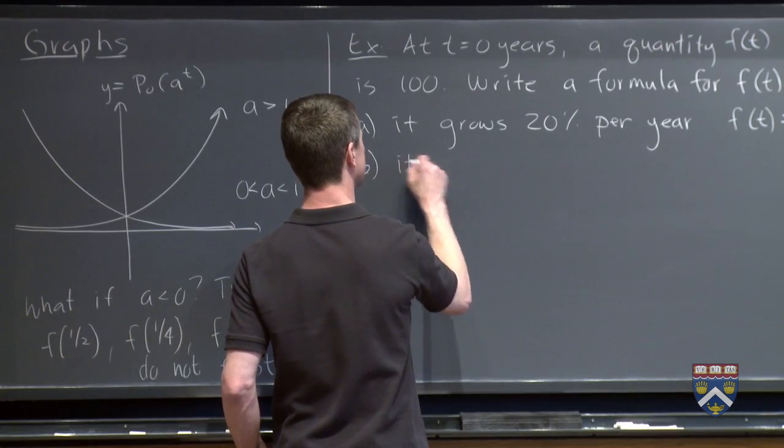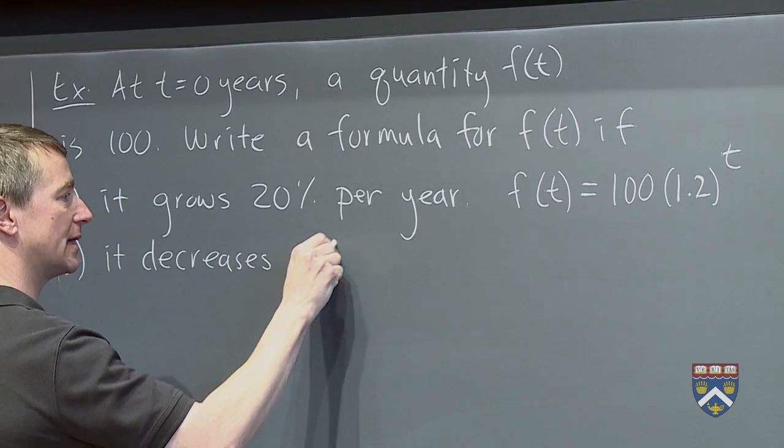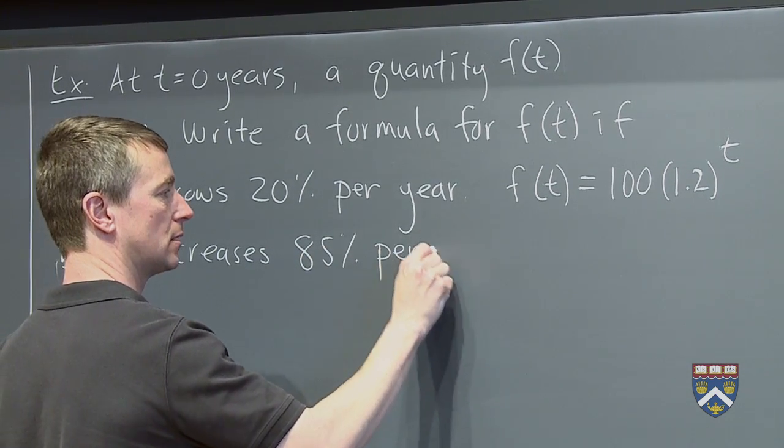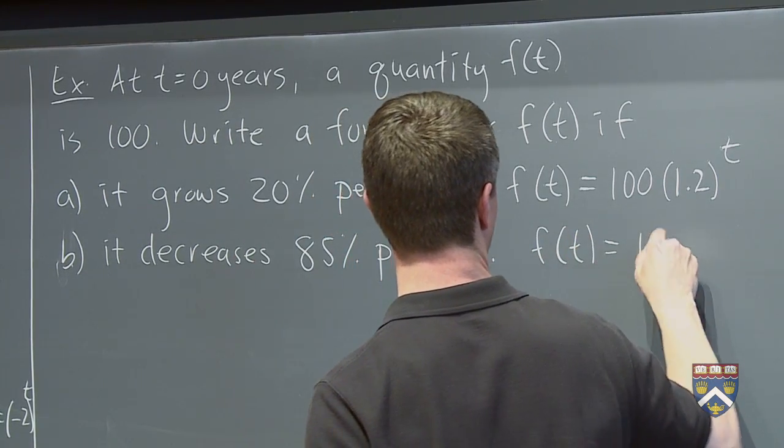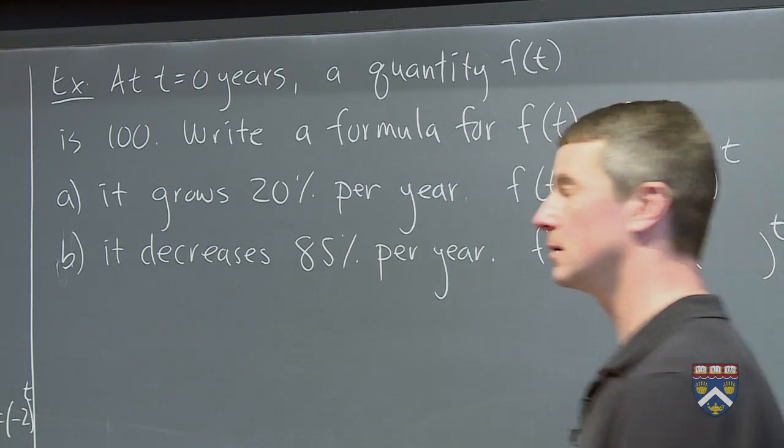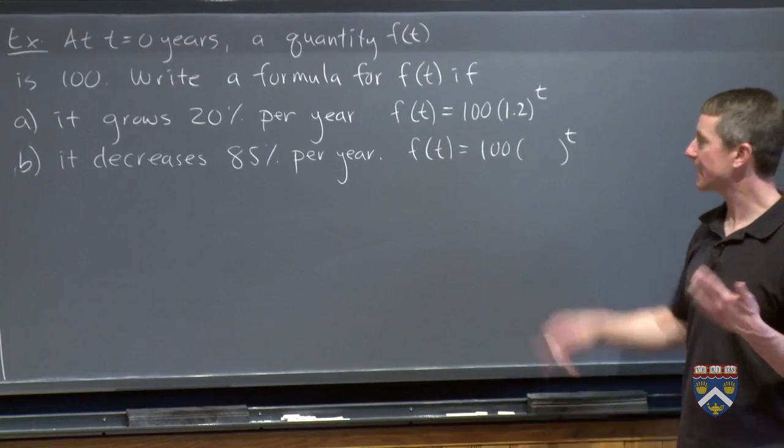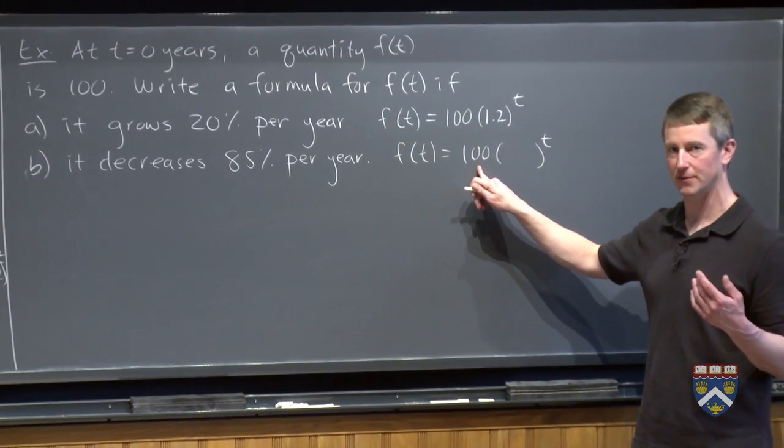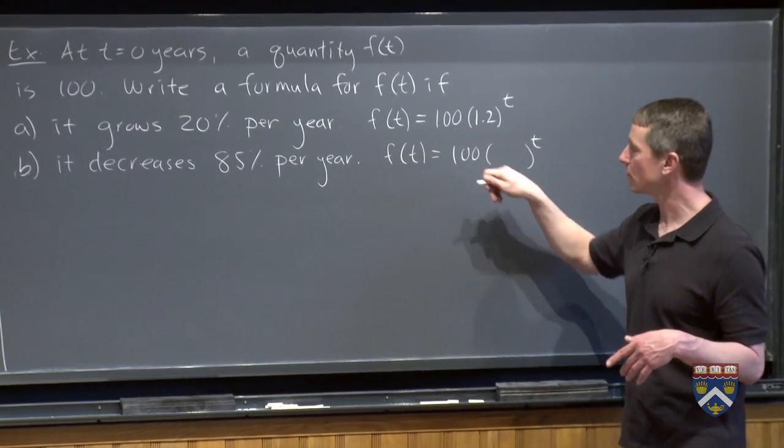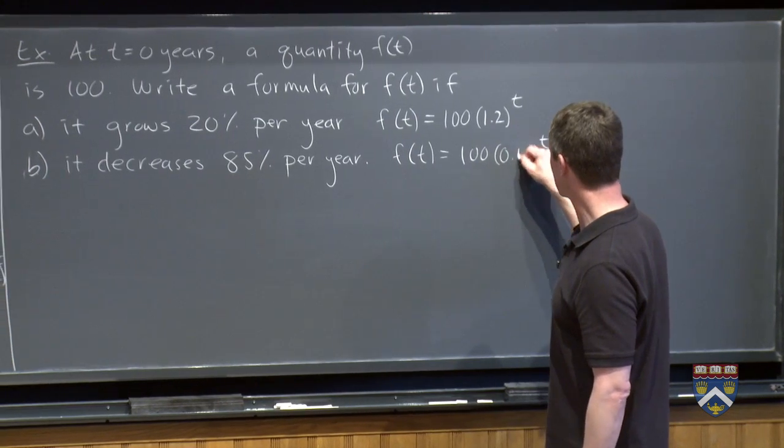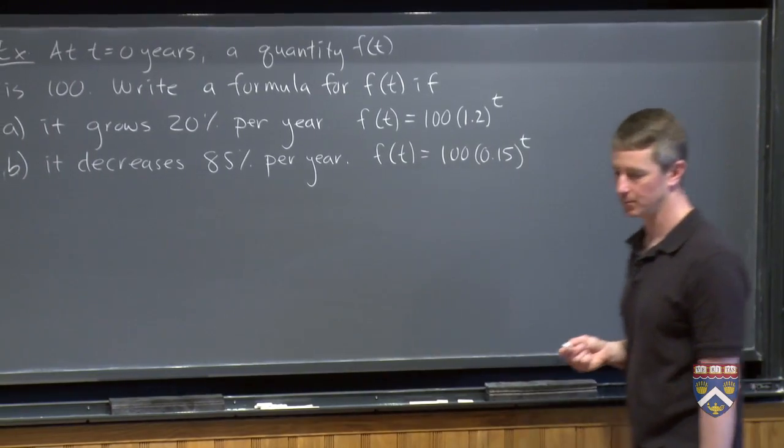What if it decreases 85% per year? So f(t) will still be 100 times a to the t. We want to decrease 85%. So if you started with 100, you should lose 85% in the first year and land with only 15% at the end of the year, meaning you take your 100 and you multiplied it by 0.15. Losing 85% is the same as keeping 15%.